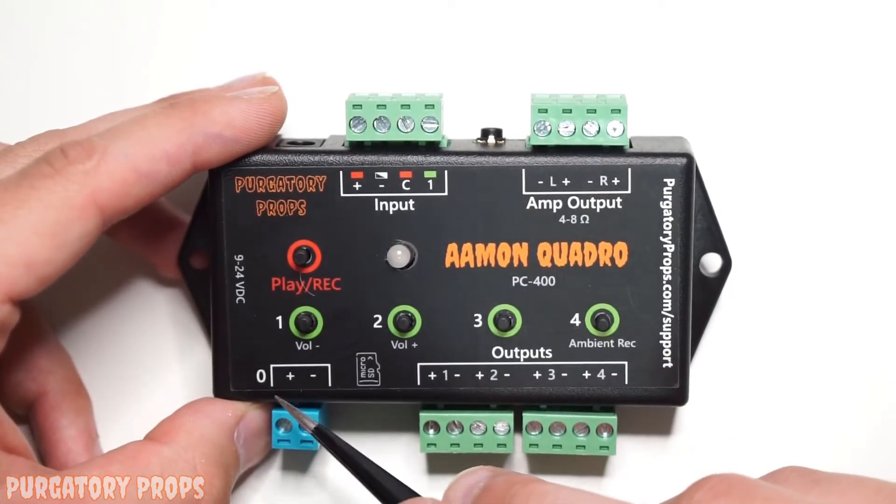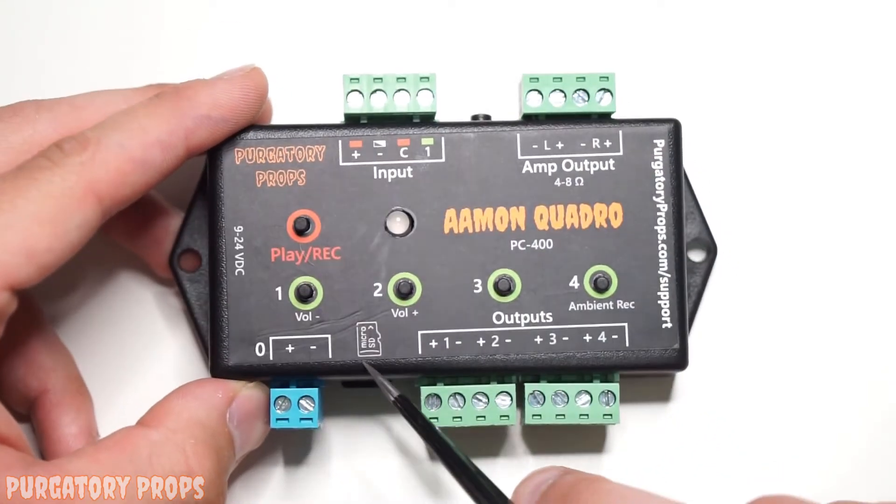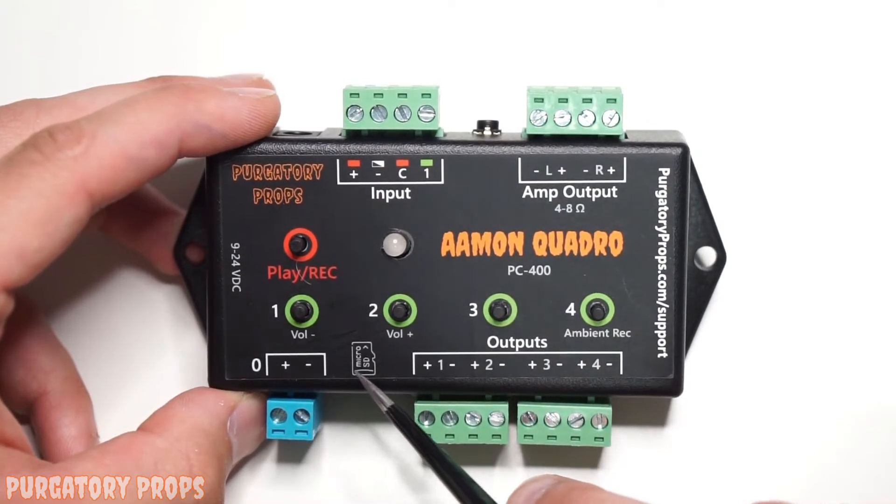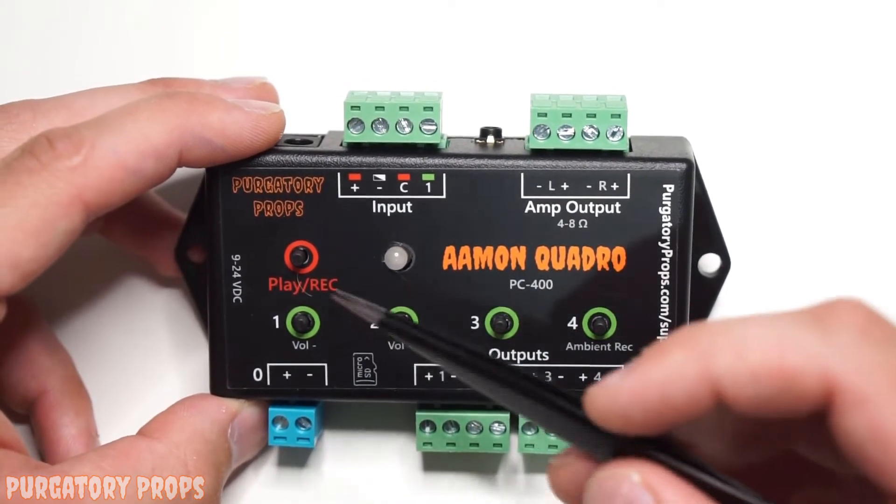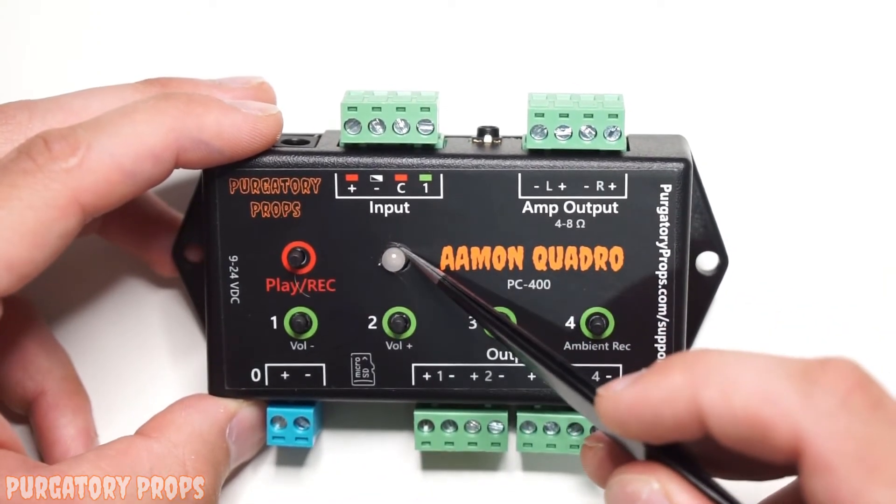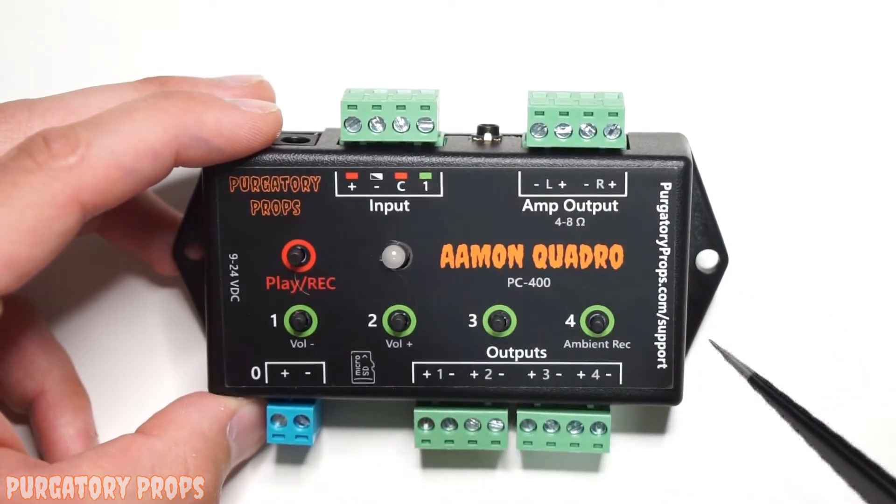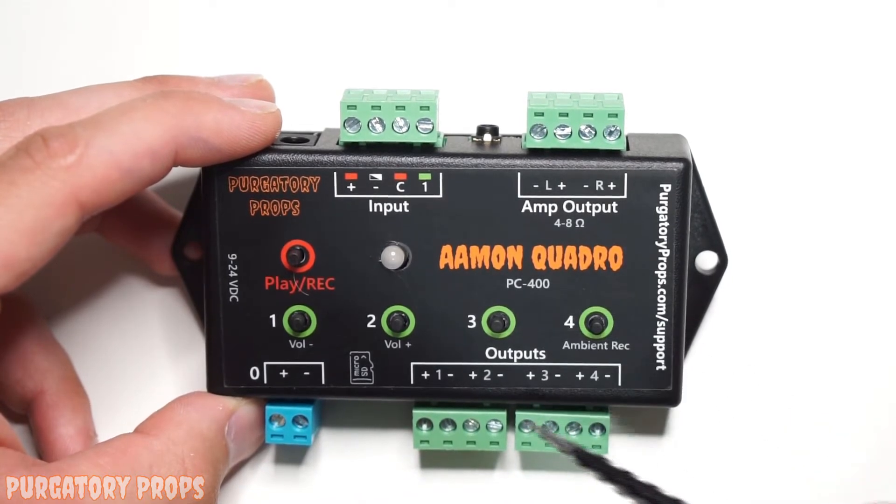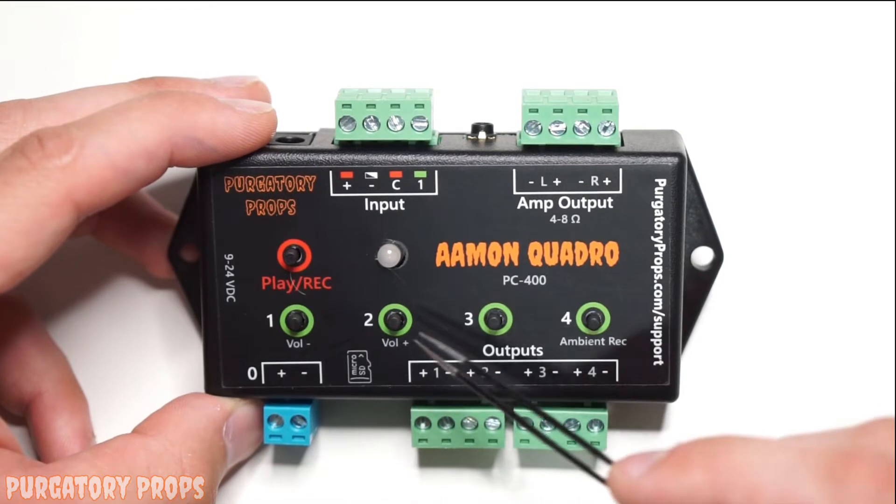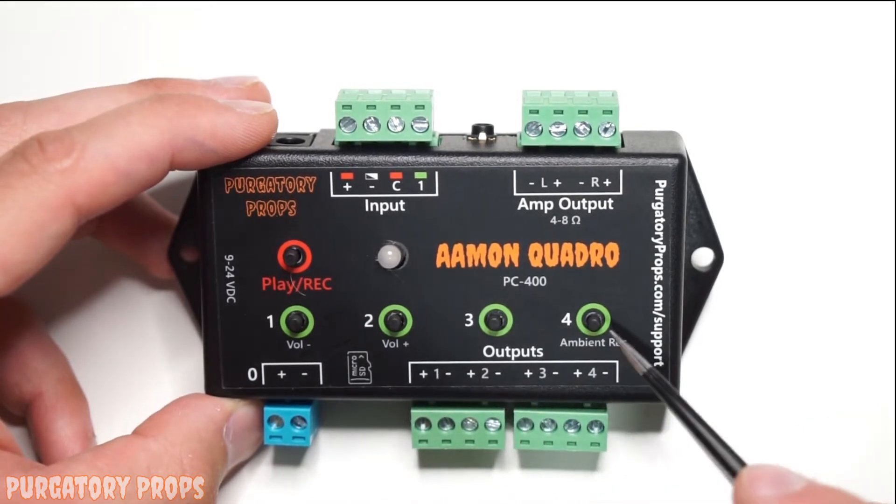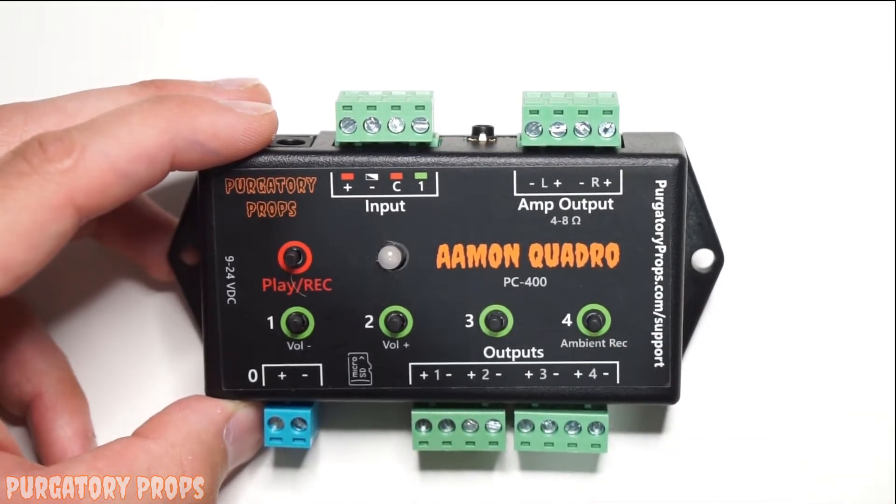Down here we have special output 0, a slot for the included 4GB microSD card, then outputs 1 through 4, the play record button, status LED, and then buttons 1 through 4 which are used for programming the channels. Button 1 also is used to lower the volume, button 2 increases the volume, and button 4 is for recording the ambient scene.